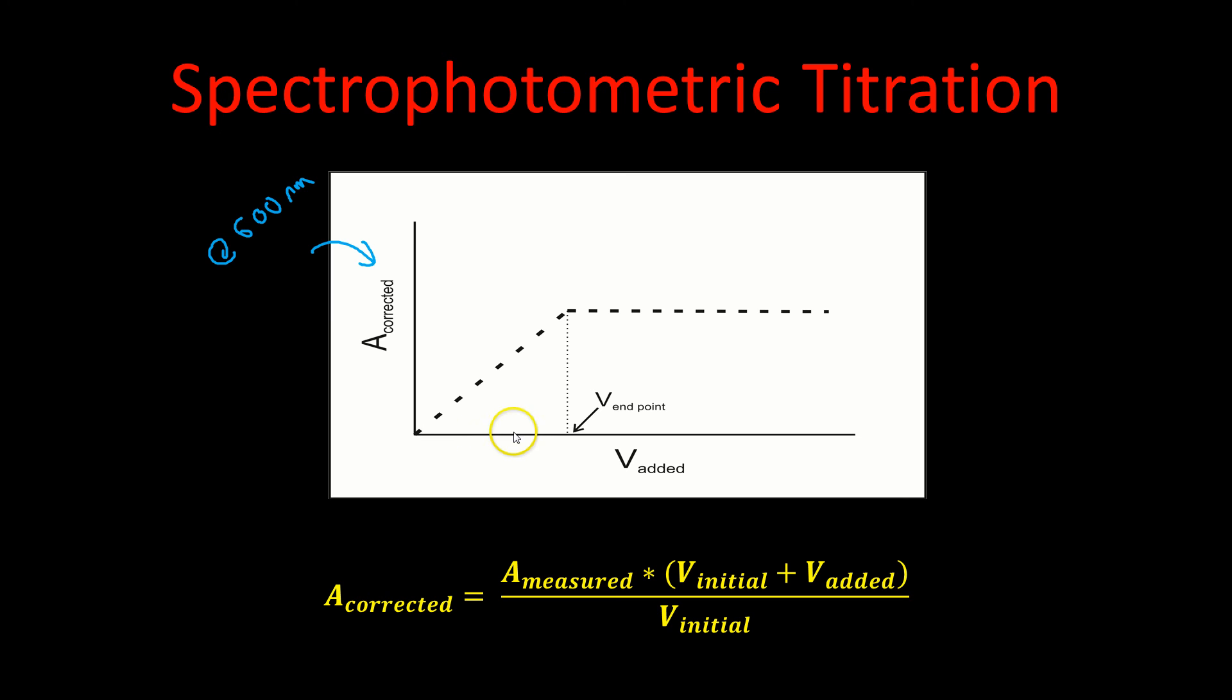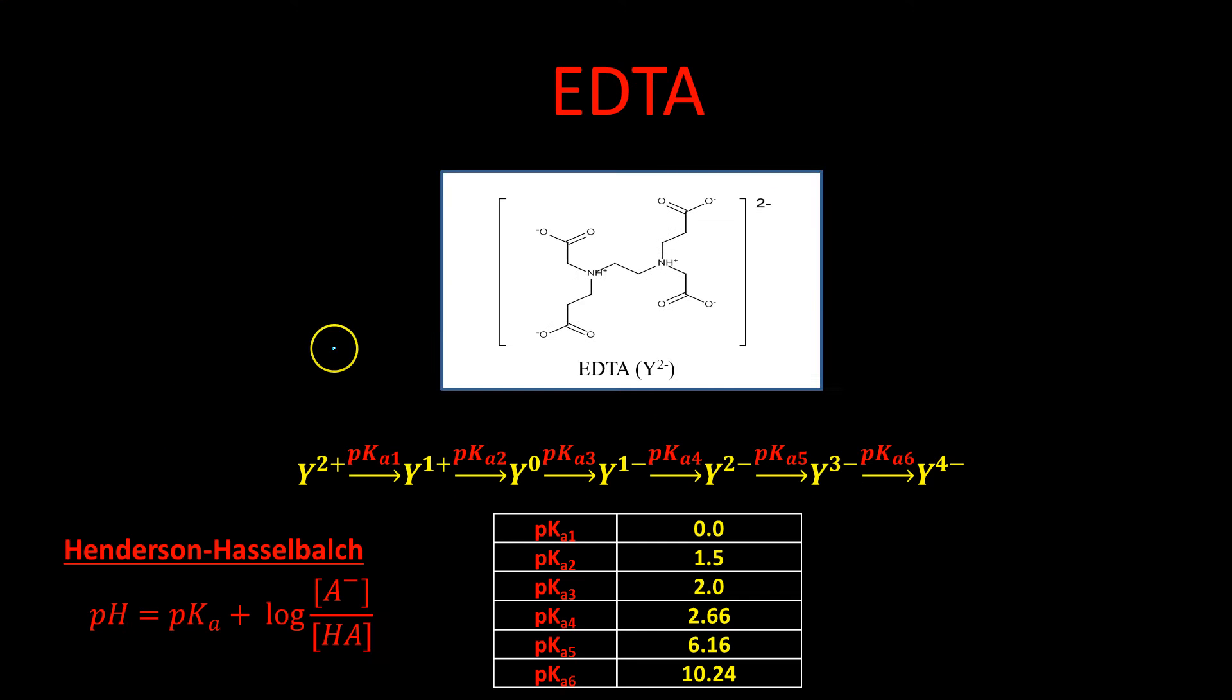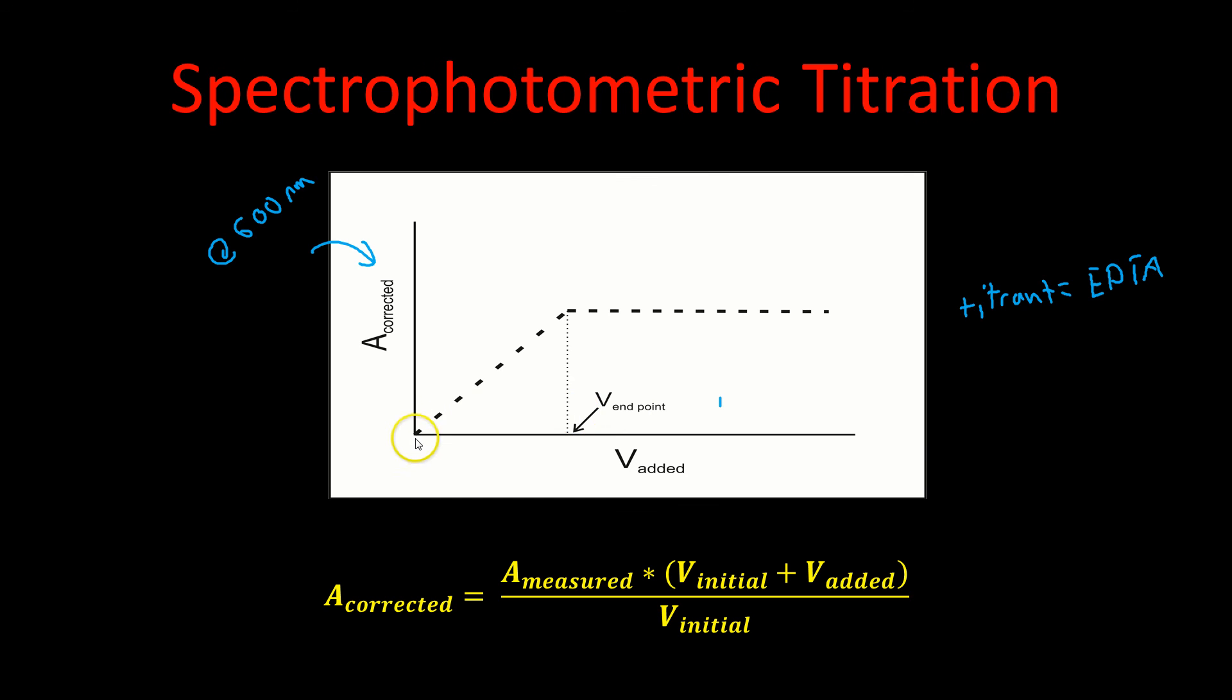We'll end up generating a titration curve that looks something like this. When we're looking at our corrected absorption at 600 nanometers, as we add our titrant, in this case our titrant is EDTA. As we add titrant in, remember I said that this forms completely, forms this complex here. Every time you add in the EDTA, it's going to form more of this complex species until we run out of copper.